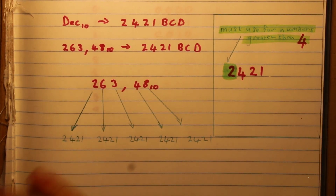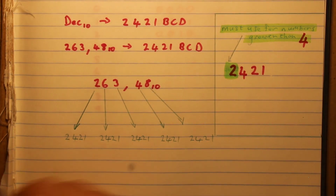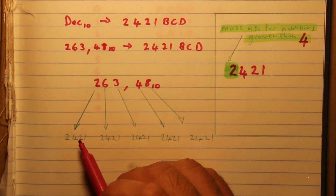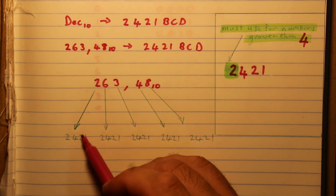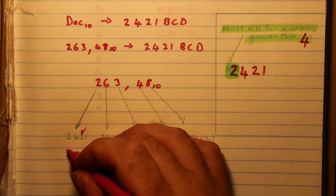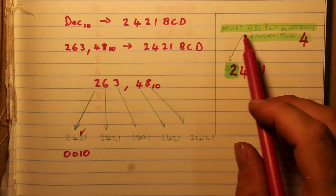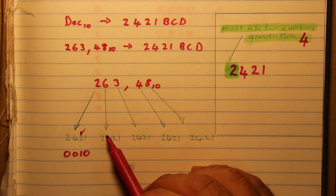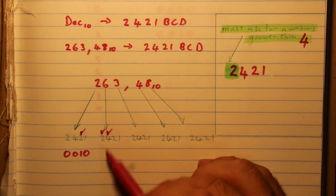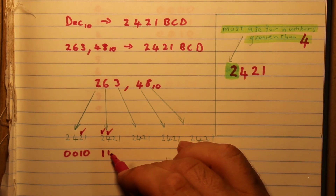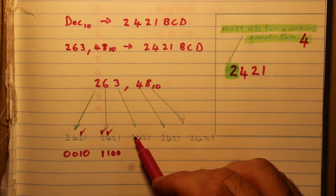Let's work through an example as it would appear in a test. The number is 263.48. Starting with 2: it's below five, so we use the first two only — 0010. For 6: it's greater than four, so we tick off that second two first, then use the four, giving 1100. For 3: it's not greater than four, so we use the two and the one — 0011.